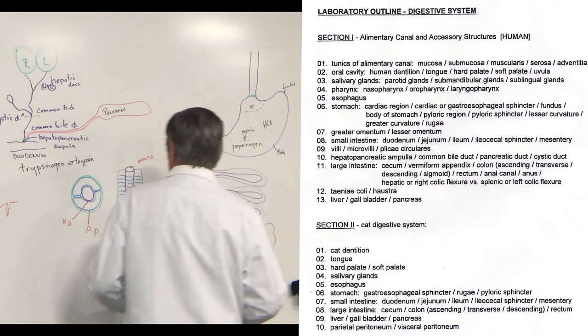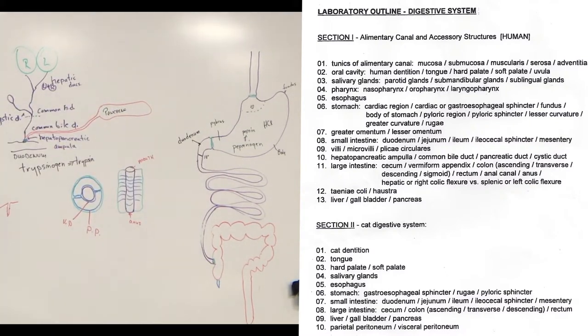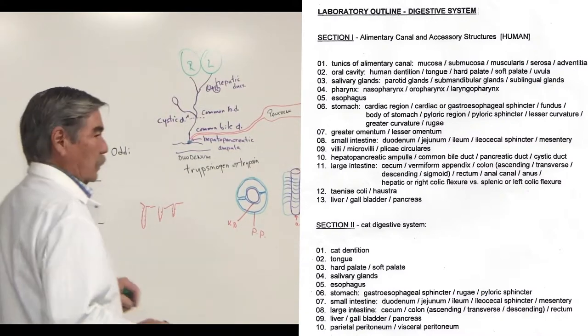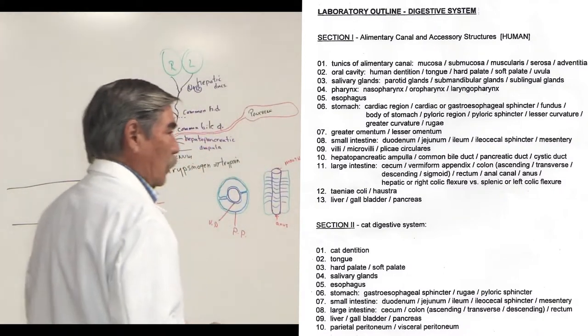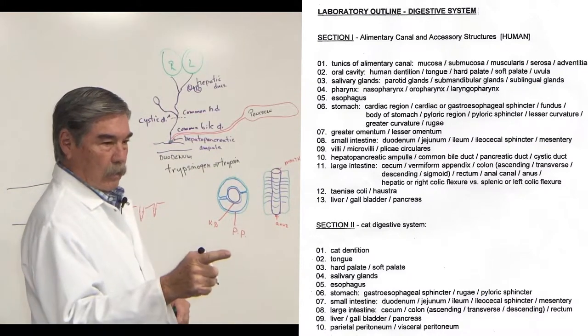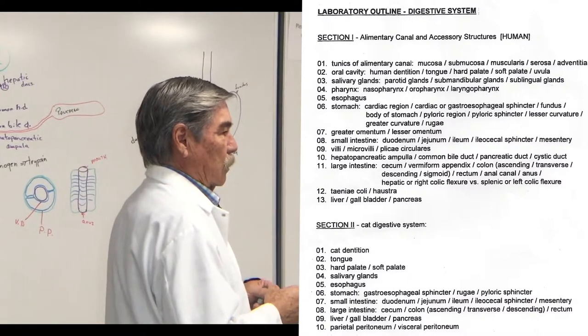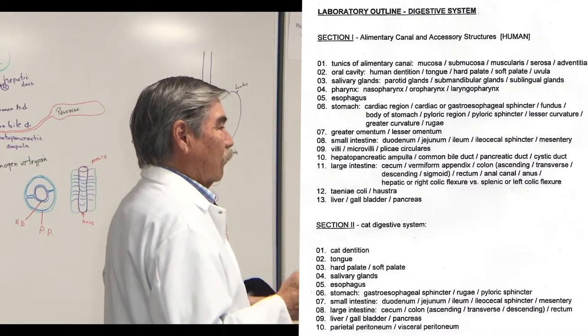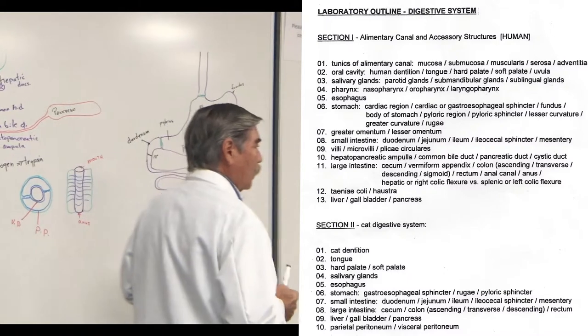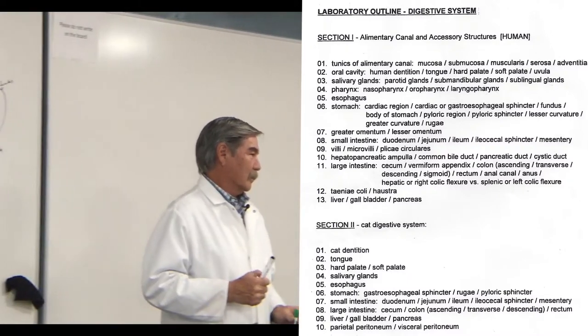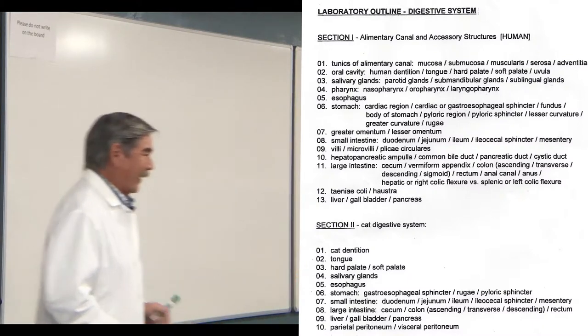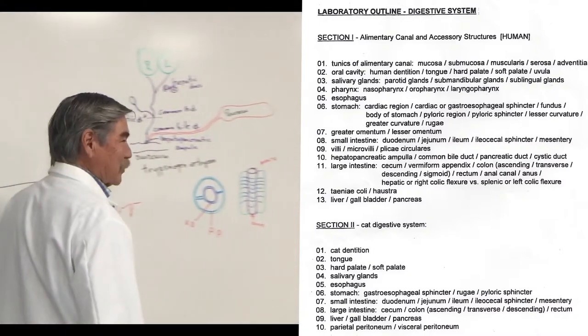Now that we're in the small intestine, we have several structures to increase surface area because that's the function of the small intestine, to increase absorption. What are, what's one of them? I hear rugae and alveoli, but I haven't heard the right one yet. Alveoli are found where? Yes, in the lungs. Rugae is found where? In the stomach. Let's move to the small intestine.